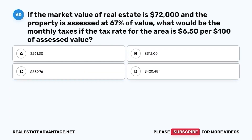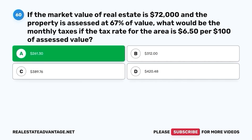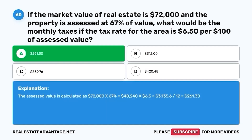Question 60. If the market value of real estate is $72,000 and the property is assessed at 67% of value, what would be the monthly taxes if the tax rate for the area is $6.50 per $100 of assessed value? A. $261.30. B. $312. C. $389.76. D. $420.48. The correct answer is A. $261.30. Assessed value: $72,000 × 0.67 = $48,240 × $6.50 per $100 = $3,135.60 ÷ 12 = $261.30 per month.